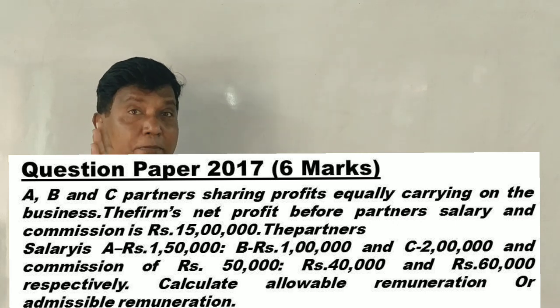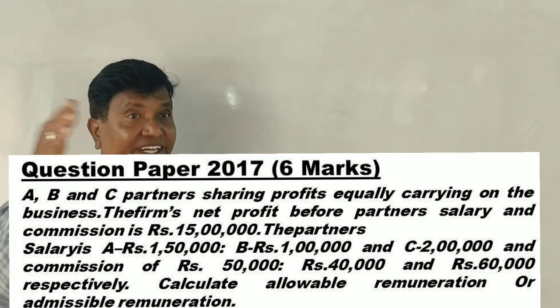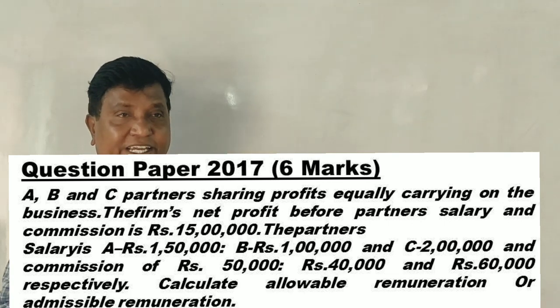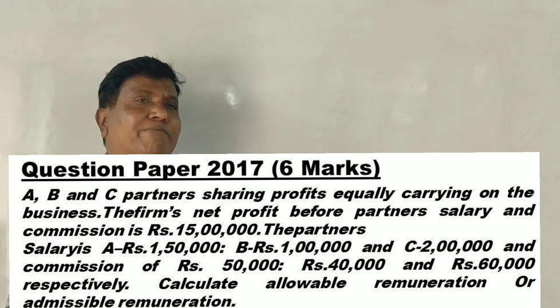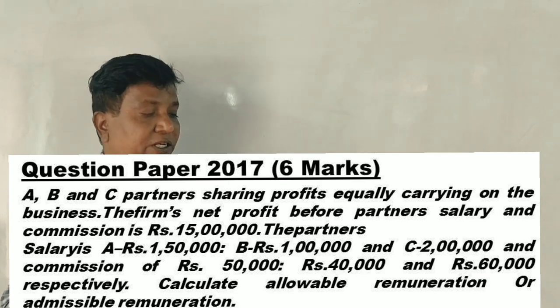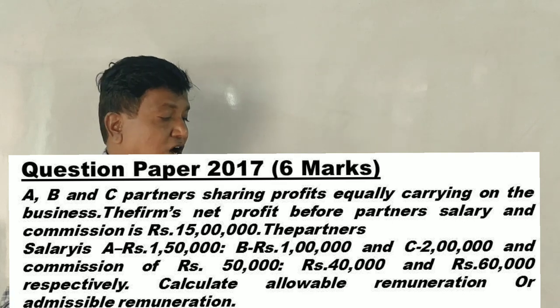Rupees 15,00,000. The partner's salary: A is 1 lakh 50, B is 1 lakh, C is 2 lakhs. Commission: 50,000 rupees, 40,000 rupees, 60,000 rupees respectively. Calculate allowable remuneration or admissible remuneration.